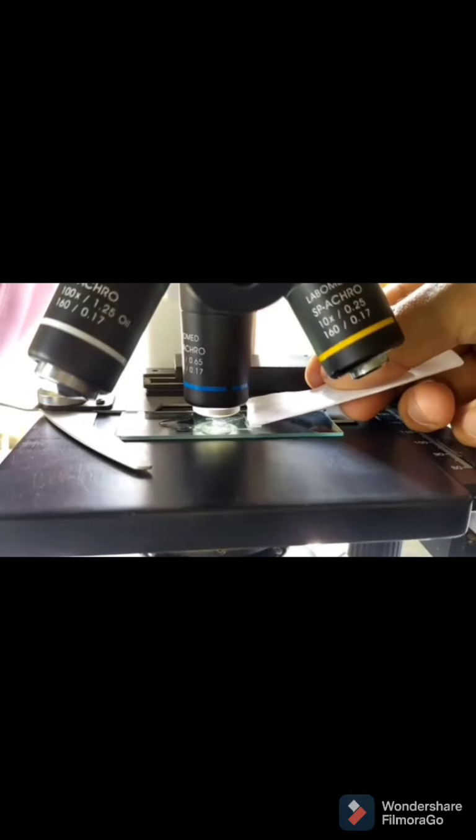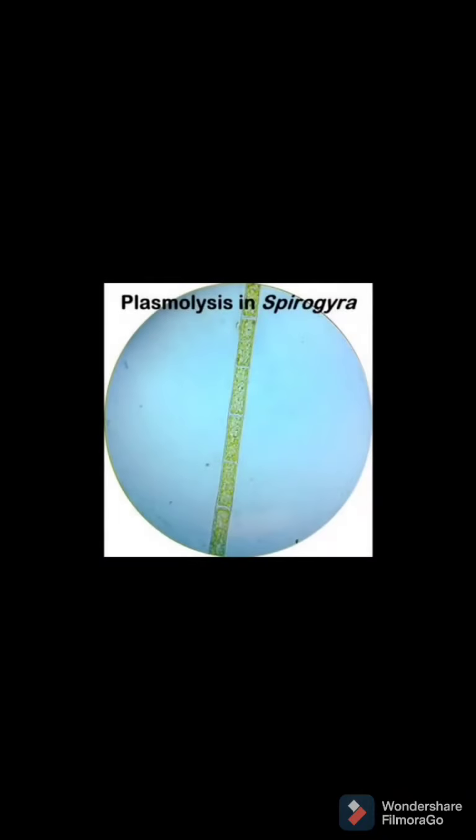Next, add distilled water. The cells regain their shape because water enters via endosmosis and the cells return to their normal state. This experiment demonstrates the tonicity of solutions.